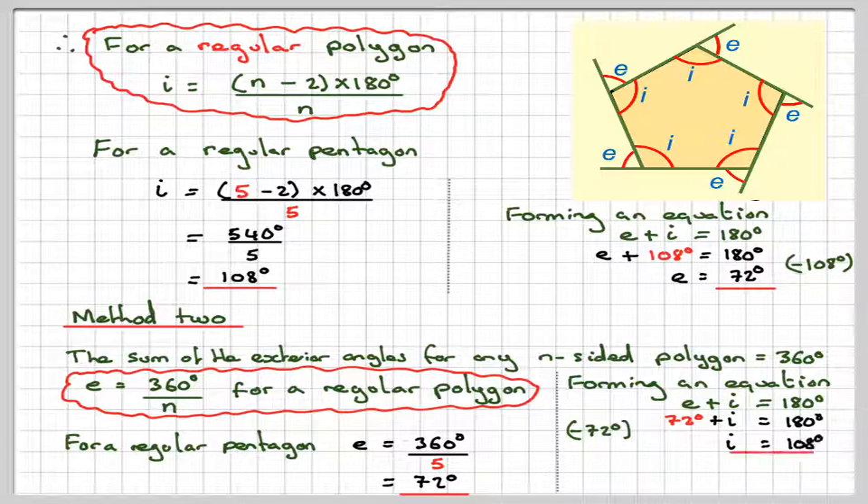So if we find E first rather than I, we can say that E is going to be 360 divided by n for a regular polygon. So in our case, for our regular pentagon, E is going to be 360 divided by 5, because there are five sides, which is equal to 72. Notice the same answer as we've got up here. And then we can just do this idea in reverse. To find the interior angle, we can say that E plus I is equal to 180, and therefore 72 plus I is 180. I will be equal to 108 degrees.